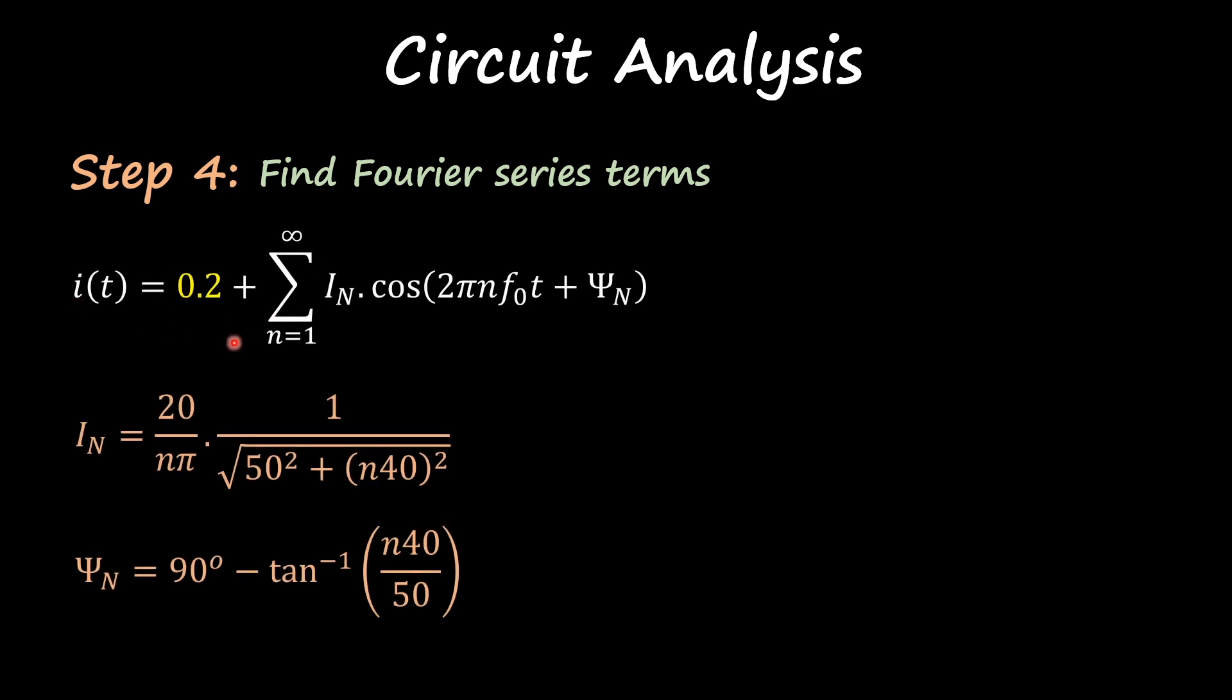I got my current, all I need to do is now substitute n equal to 1, 2, 3, 4, 5, so forth and so on for as many terms as I need. In our case, we want to find the first four non-zero terms. So the first one is just your DC component 0.2, then n equal to 1 and I get this, so I'm literally just substituting n equal to 1 over here and computing the rest of the numbers.